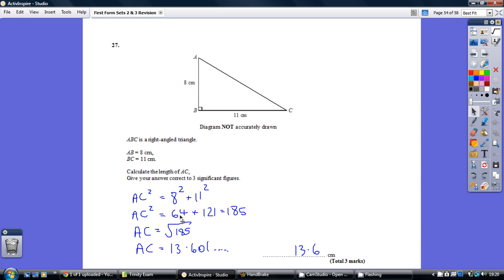8 squared is 8 times 8, which is 64. 11 squared is 11 times 11, which is 121. Add these together we get 185. So AC squared is 185.